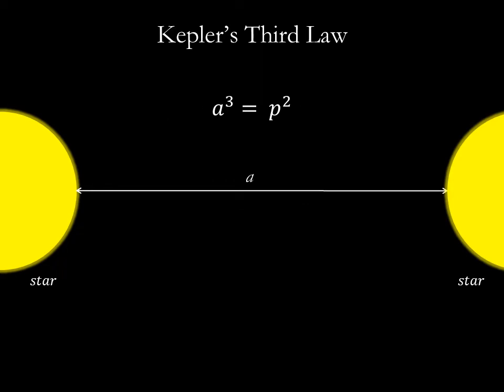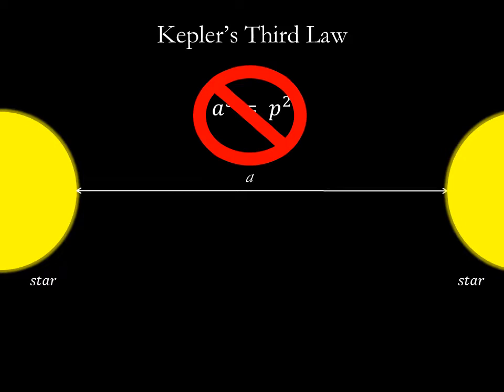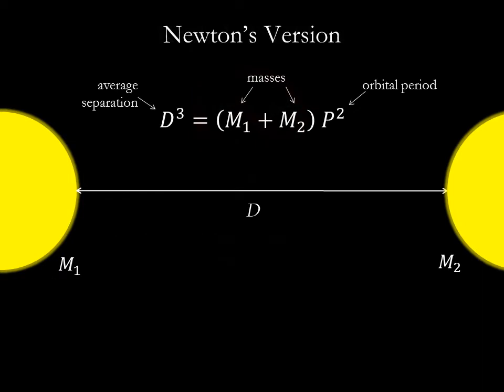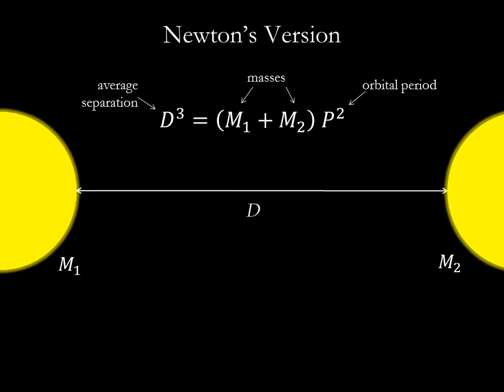But what if we have two stars with similar masses? Kepler's third law will not work in this situation. Thankfully, Newton came along after Kepler and generalized Kepler's third law to include mass. In Newton's version, the distance cubed between two stars is equal to the sum of their masses times the orbital period squared. Now we have an equation with mass in it, but it's only going to work if we have two stars orbiting around one another.